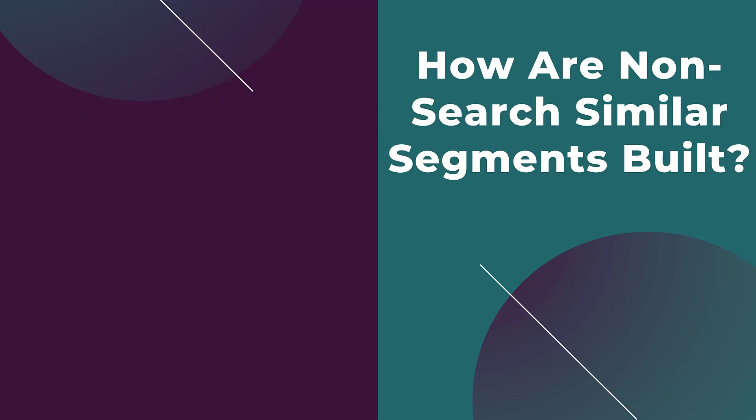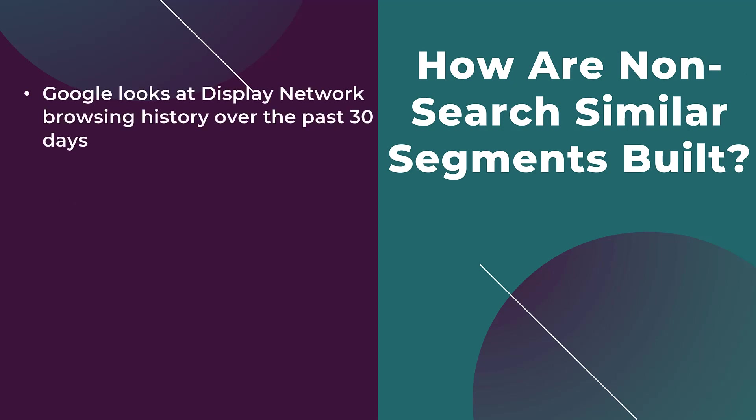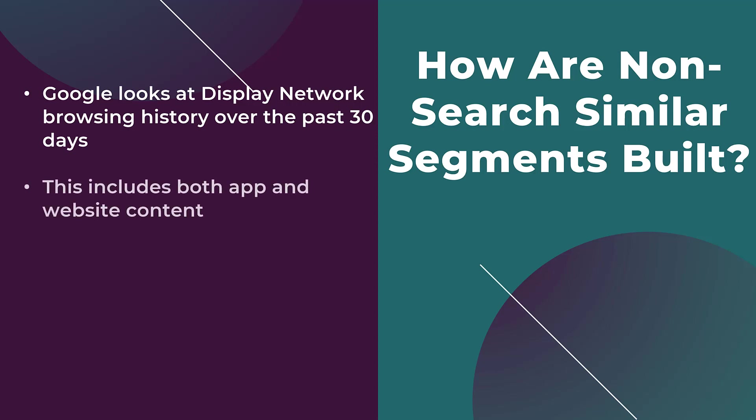Going away from search, how are non-search similar segments built? One way is that Google looks at display network browsing history from the past 30 days, and also looks at the content the user may be viewing to give additional signals about who that person is. Google will then try to find users who have similar interests and characteristics to those reviewing similar content in our original segments. This also includes app activity, which may be useful if you have an app and want to find users with similar behaviors.